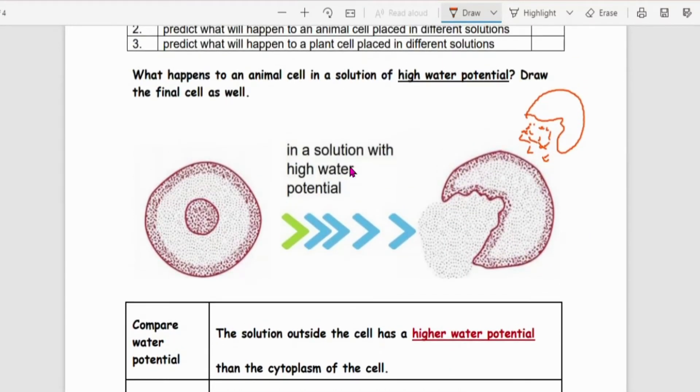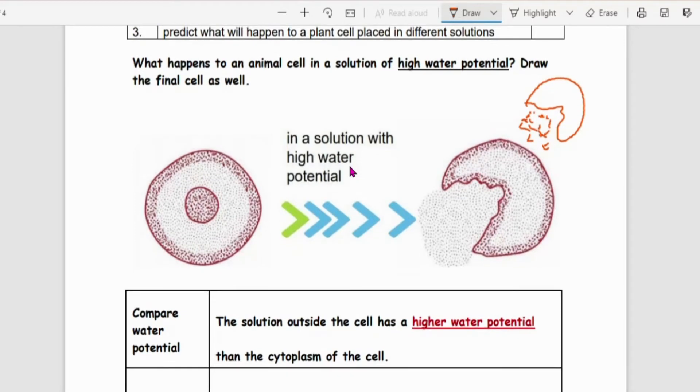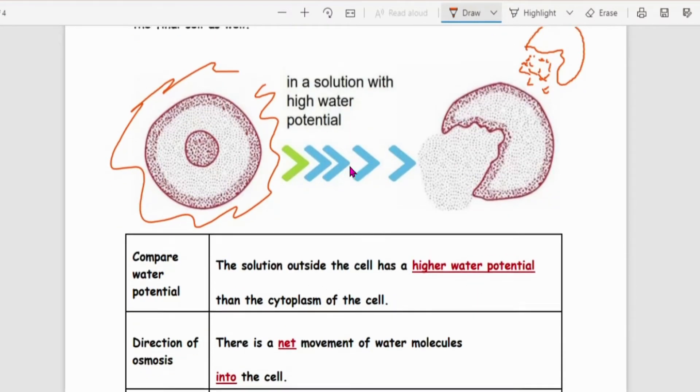Now, so what am I supposed to do to describe what happens to an animal cell? First thing, compare the water potential. As typical of any movement of substance question. So we know that because it's in a solution of high water potential, so this outside here has high water potential. So we are able to identify that.